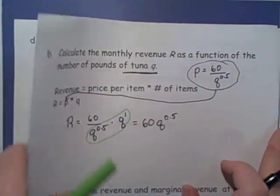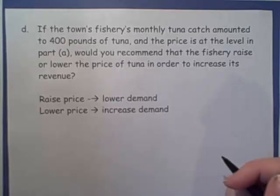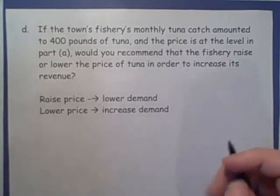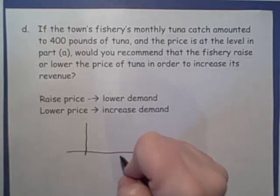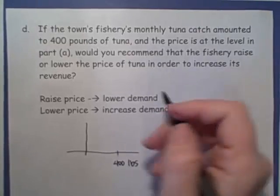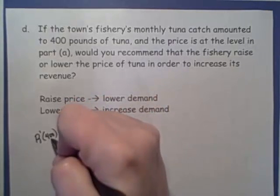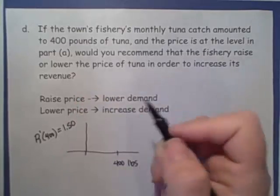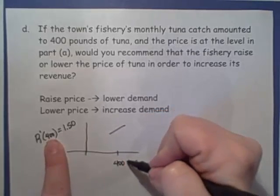Okay, so let's move on to the next part. Part D. If the town's fishery's monthly tuna catch amounted to 400 pounds of tuna, and the price is set at the level in Part A, would you recommend that the fishery raise or lower the price of tuna in order to increase its revenue? Okay, so what we know so far is that, so suppose this is our revenue function, and here we have 400 pounds of tuna. Our revenue function has that when, at 400 pounds, our marginal revenue, or our rate of change of our revenue function, this is $1.50. So our revenue is increasing here. Our revenue is heading up when we sell 400 pounds of tuna.